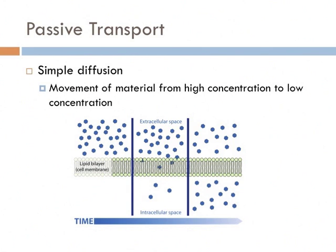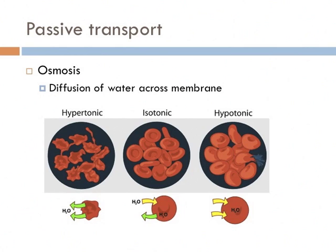Simple diffusion is our first example. Let's bring this back to cells. Here we have an example of high concentration of molecules on the outer part of a cell membrane, with low concentration inside. The molecules move freely across the membrane until the concentrations on both sides equalize. This is known as simple diffusion. Water does this in cells, and we have a special term for the simple diffusion of water — and that term is osmosis.